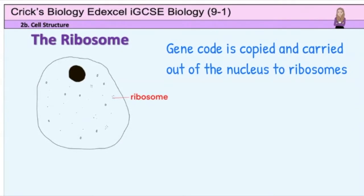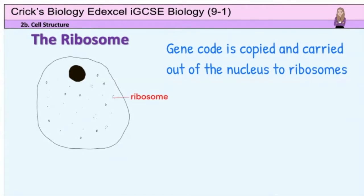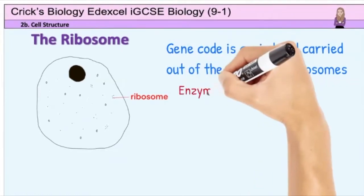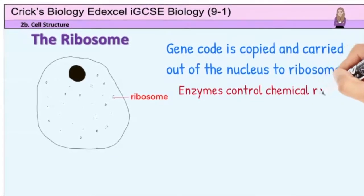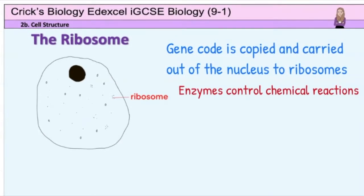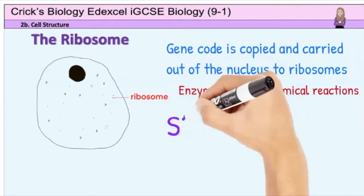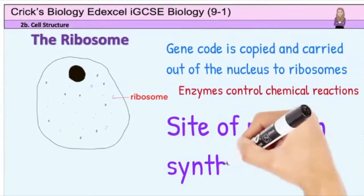Ribosomes are the tiny organelles found in the cytoplasm of both plant and animal cells. Many of the proteins made by ribosomes are enzymes, which are very important for controlling chemical reactions inside the organism. So ribosomes are the site of protein synthesis.